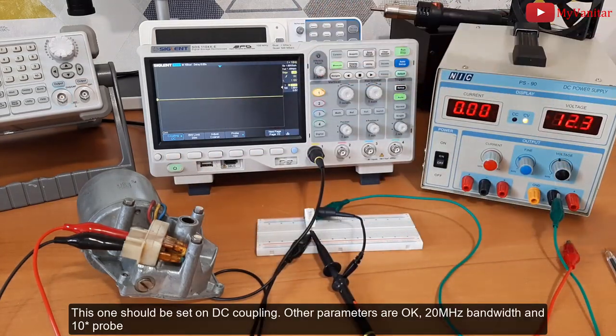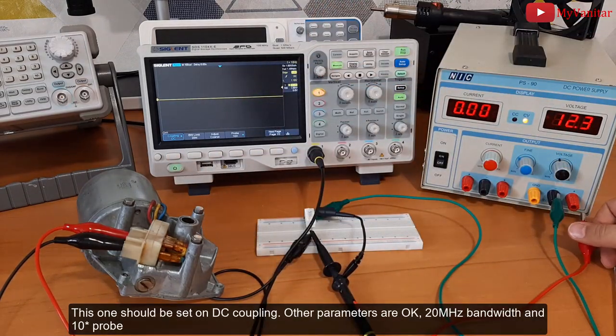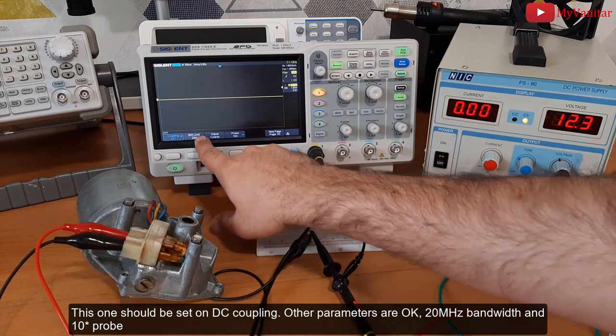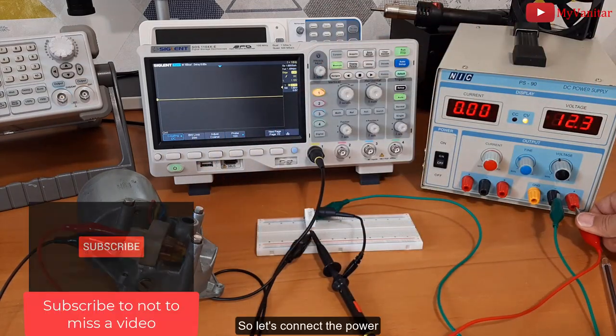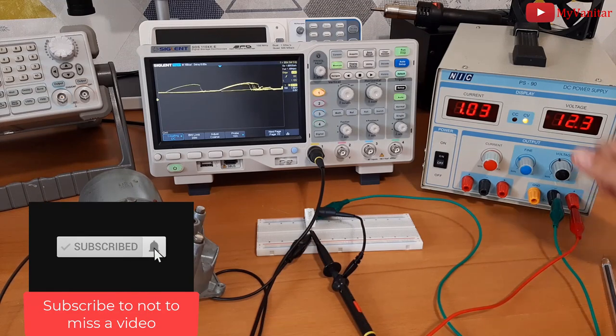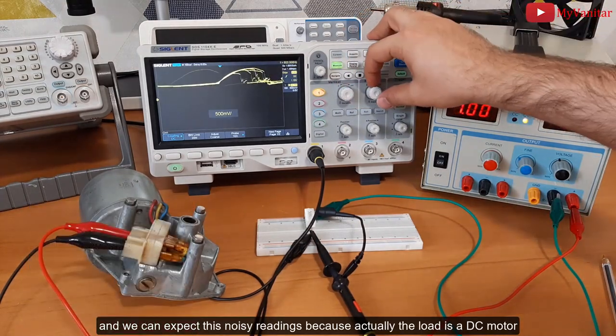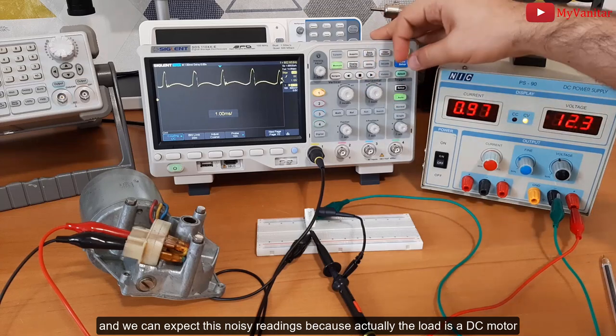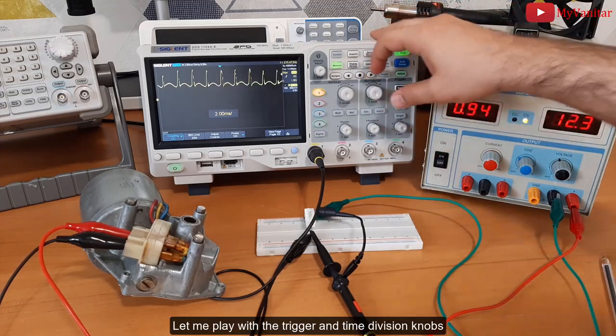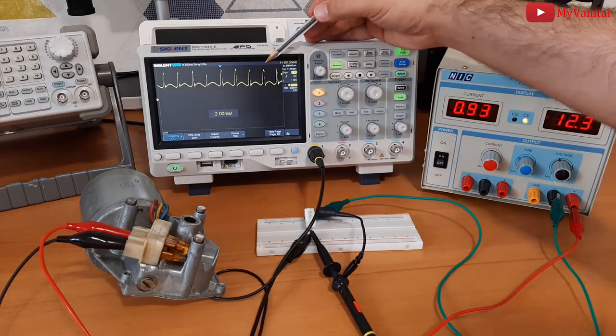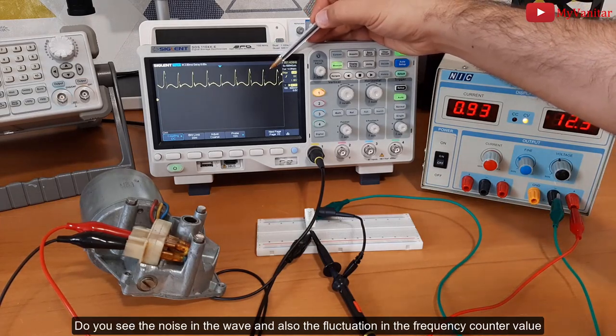This one should be set on DC coupling. Other parameters are okay - 20 megahertz bandwidth and times 10 probe. So let's connect the power, and we can expect noisy readings because actually the load is a DC motor. Let me play with the trigger and time division knobs. You see the noise in the wave and I saw the